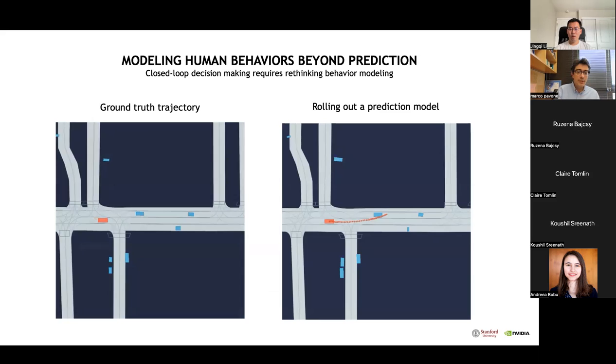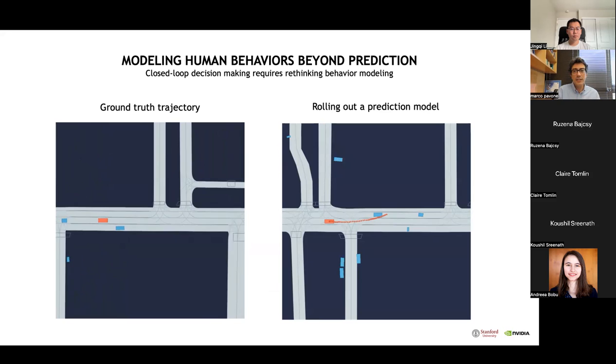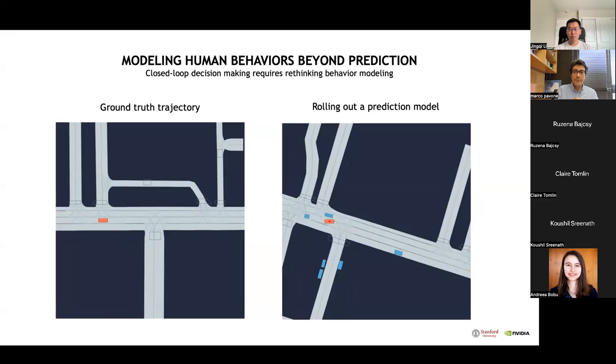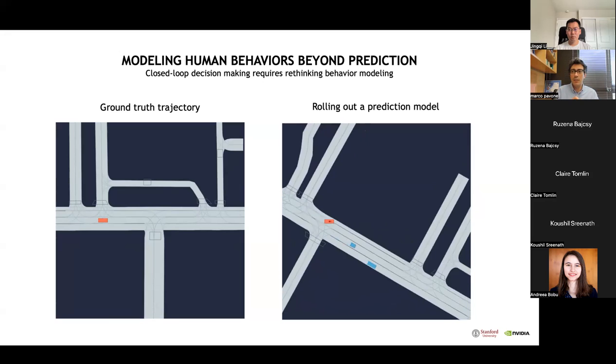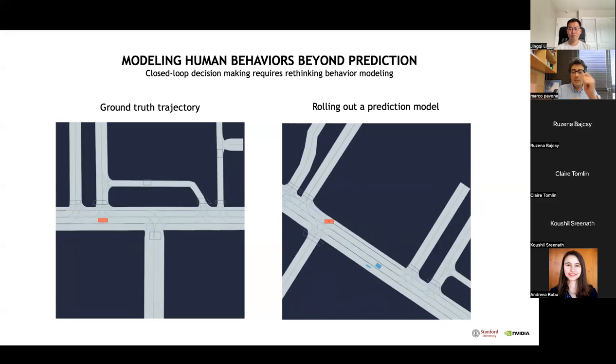The fundamental reason behind this divergence lies in prediction model errors that accumulate over time and eventually cause the machine learning model to diverge from states it knows how to handle. Therefore, it ends in an out-of-distribution situation and the output becomes erratic. To address these limitations, we have developed a hierarchical decision-making framework that disentangles the imitation problem into modeling high-level intent and low-level control.